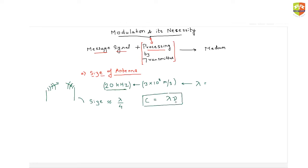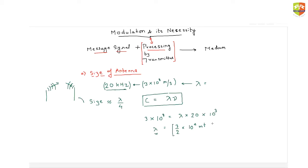For an EM wave, speed of light equals lambda times frequency. Substituting the values: speed of light is 3×10⁸, and frequency is 20 kilohertz = 20×10³. So the wavelength comes out to be (3/2)×10⁴ meters — a very large wavelength, running into kilometers, about 15 kilometers.